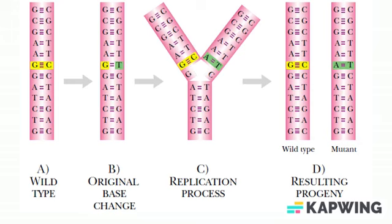In a transition, a pyrimidine is replaced by another pyrimidine — that is, T is replaced by C or vice versa — or a purine is replaced by another purine, that is, A is replaced by G or vice versa. A transversion occurs when one base is replaced by another of a different type.